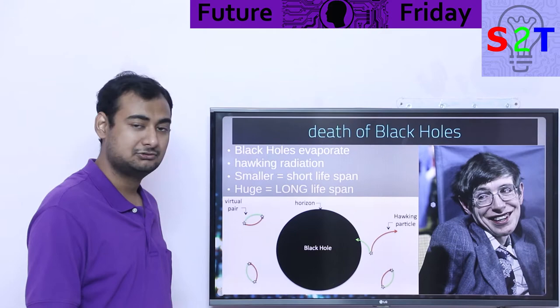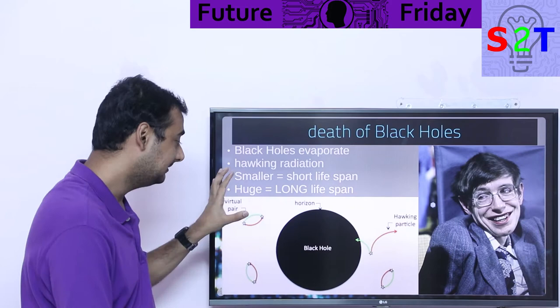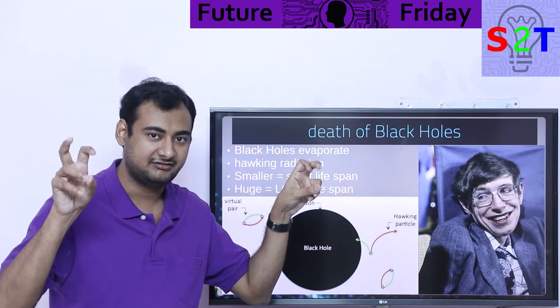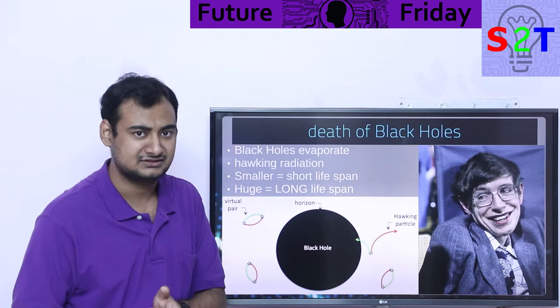This is where Stephen Hawking is so popular - he figured this out. Black holes are not infinite, they will die out same as a star. They do this through Hawking radiation. Black holes evaporate away. They're not having nuclear fusion, but somehow they're losing their mass.